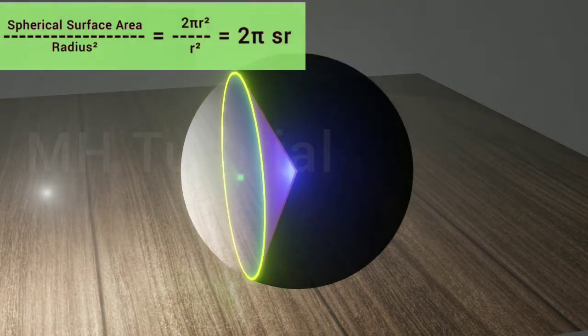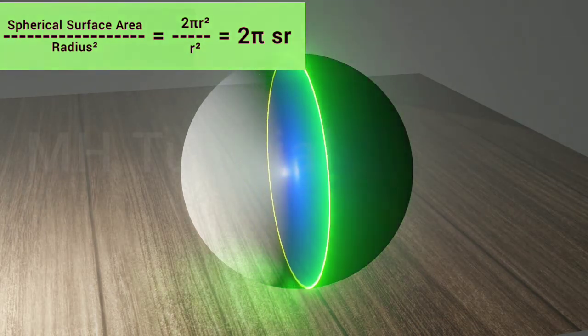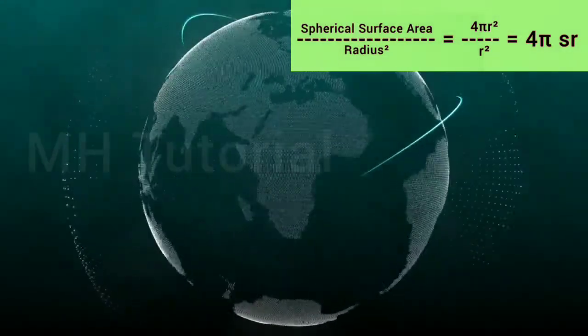For a hemisphere, the solid angle it creates at its center is 2π steradians. For the whole sphere, the solid angle is 4π steradians.